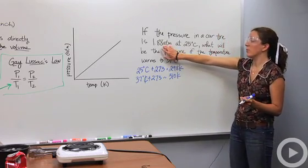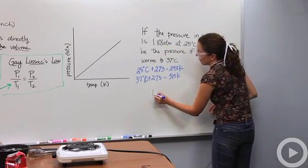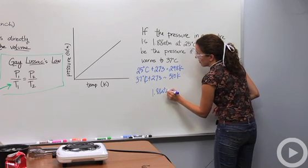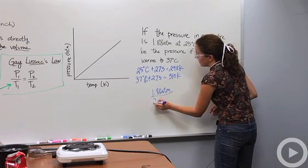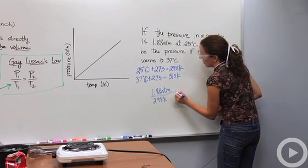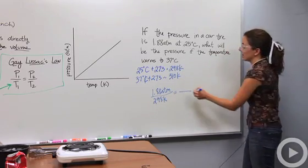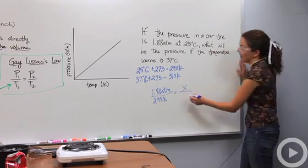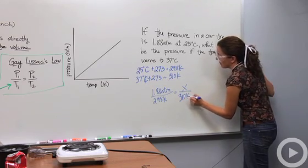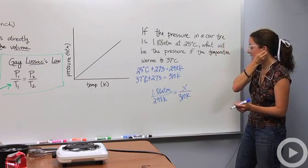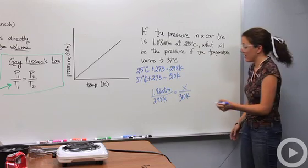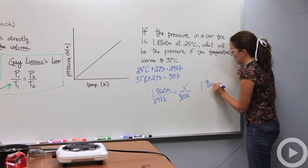So my first pressure, when I woke up, the tire pressure was 1.88 atm. And the temperature outside was 298 Kelvin. We don't know the pressure at the end of the day when it's 37 degrees Celsius. So we're going to say x over 310 Kelvin. We cross multiply 1.88 times 310 divided by 298. And it's going to give me 1.96 atm.